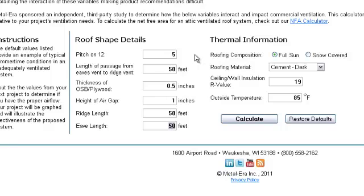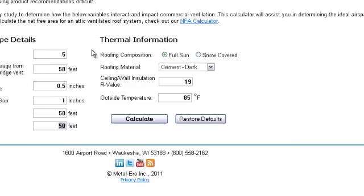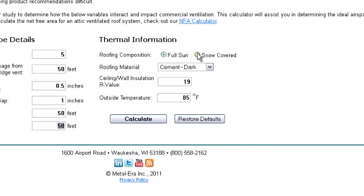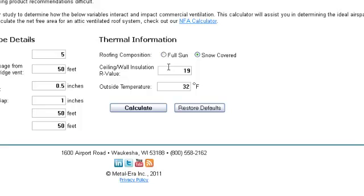Now, because I'm from Wisconsin, I am concerned about ice damming, so I'm going to run this as a wintertime scenario on a snow-covered roof. The R value will be 19, and the outside temperature will be 22 degrees.